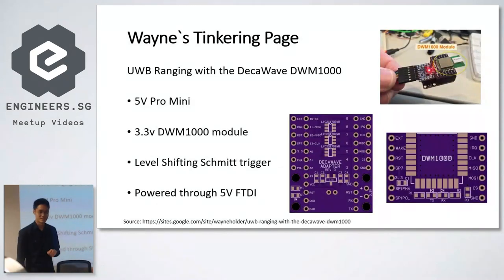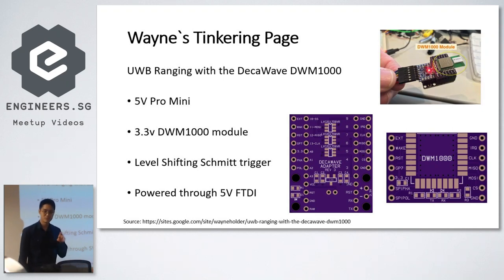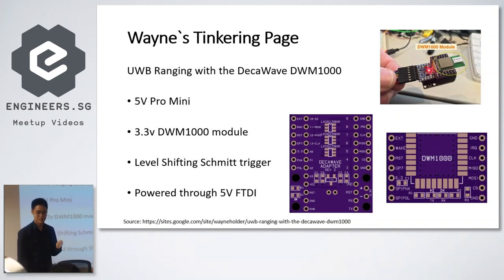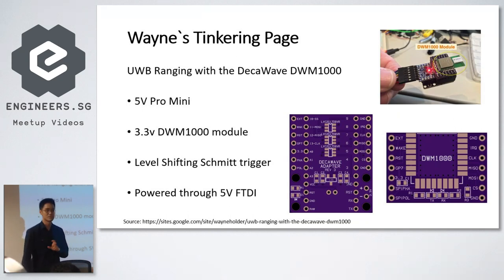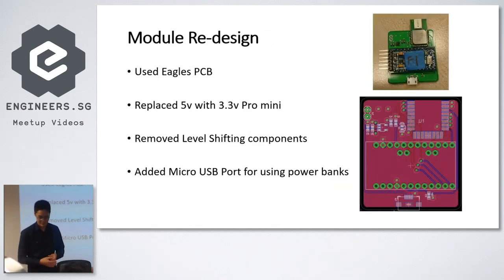I found this Wayne Tinkering page which I referenced from. He used a module called UWM-1000 and mixed it with a Pro Mini 5V. He designed in level-shifting circuitry because he had some 5V controllers around, and it was powered through an FTDI. I looked at his design and redesigned it to use a 3.3V Pro Mini, so I could remove all the level-shifting components. I also added a micro USB port so I can use power banks to test.